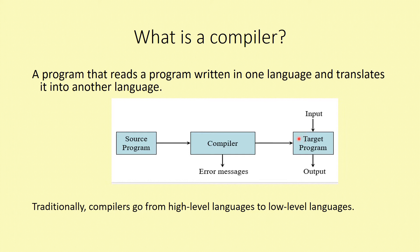We call the input a source program and the output a target program. We call the input language a high-level language and the output a low-level language — zeros and ones.